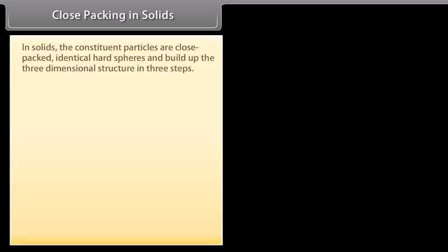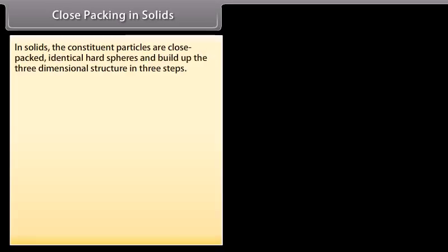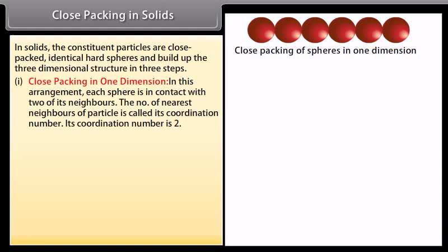In solids, the constituent particles are close packed as identical hard spheres and build up the 3-dimensional structure in 3 steps. Step 1: Close packing in 1 dimension. In this arrangement, each sphere is in contact with 2 of its neighbours. The number of nearest neighbours of a particle is called its coordination number; here the coordination number is 2.